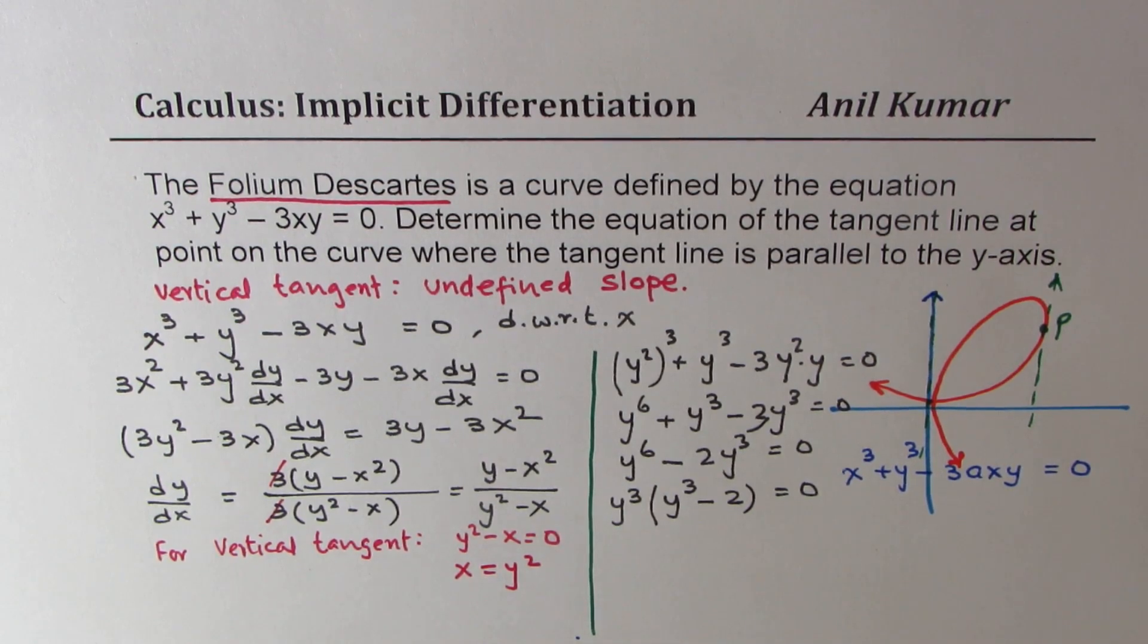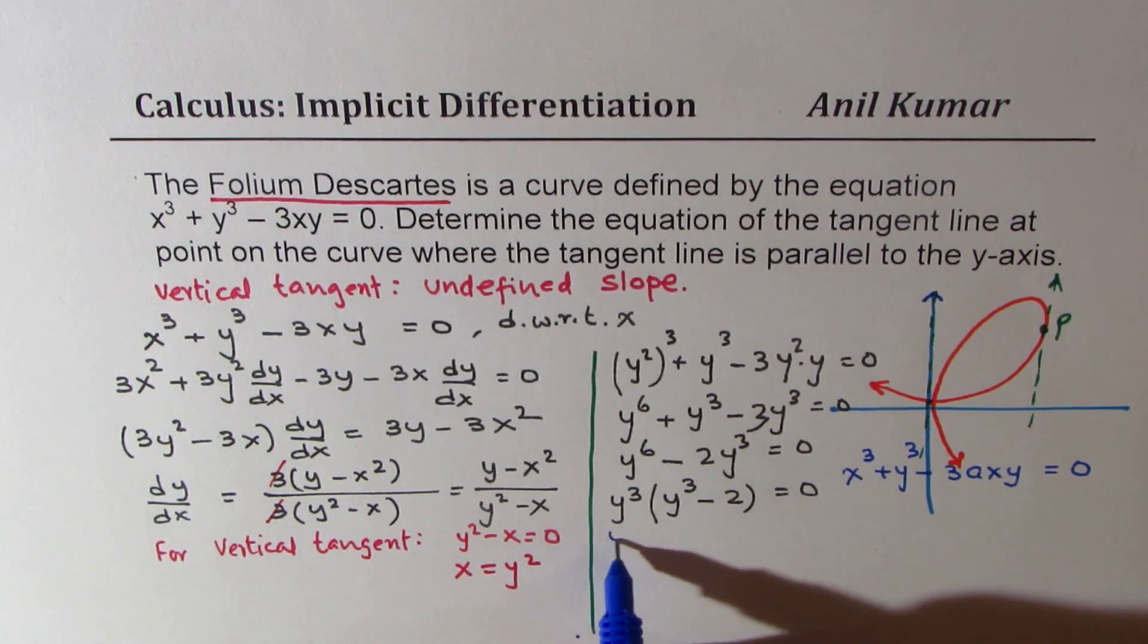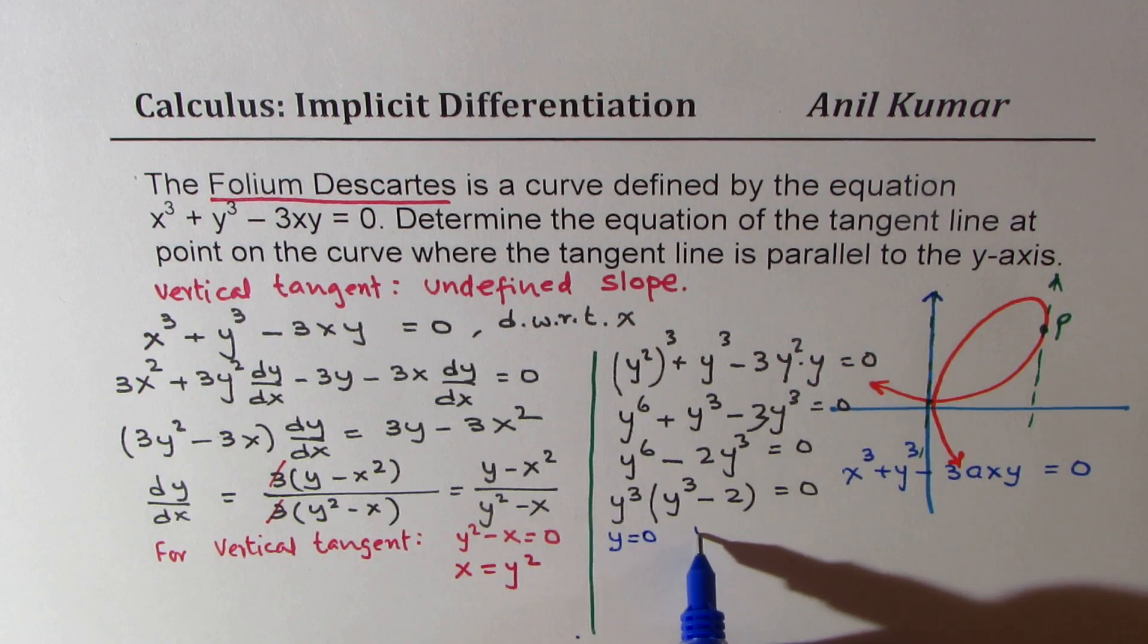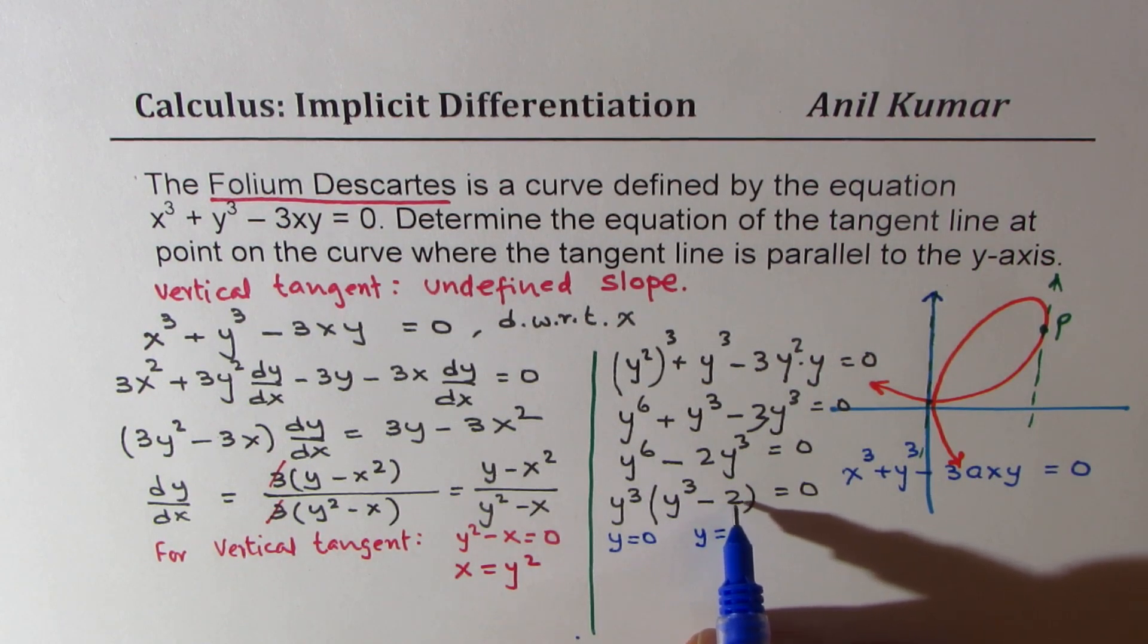So that gives you two values for y, one is y equals to 0, the other one is y equals to cube root of 2, 2 to the power of 1 over 3.